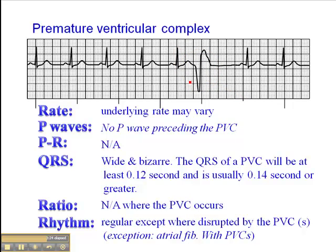It's worth mentioning that you'll sometimes hear people talk about a compensatory pause following a PVC. A compensatory pause means that if you map out the R-to-R waves, the distance between the beat preceding the PVC and the beat after the PVC is equal to exactly two cycles. Most PVCs will show a compensatory pause, but I wouldn't hang your hat on it because not all PVCs have a compensatory pause — and sometimes you'll see PACs with a compensatory pause.